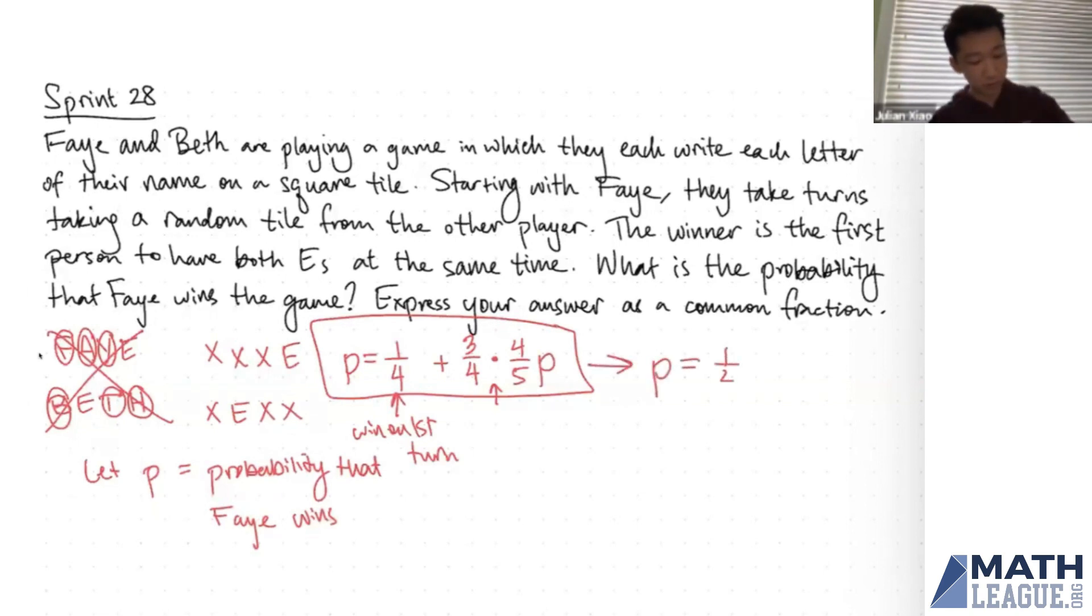So P is equal to one-fourth plus three-fifths times P. So that means two-fifths times P is equal to one-fourth, and so P is five-halves times one-fourth, or five over eight. And so five over eight is our final answer.